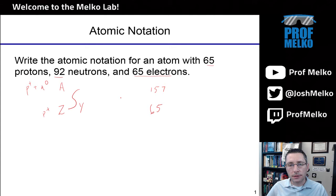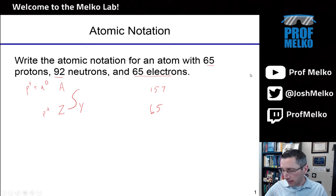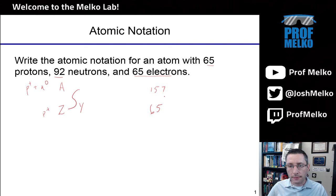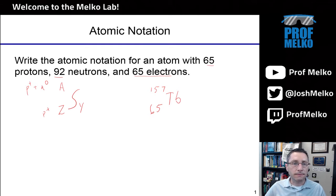So now, what is the element symbol? Remember, the element is defined by its number of protons. For 65 protons, we go to the periodic table — 65 is terbium, Tb. So here's the completed atomic notation given this information.